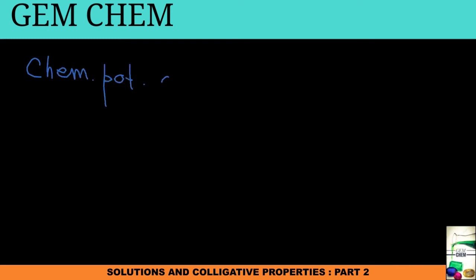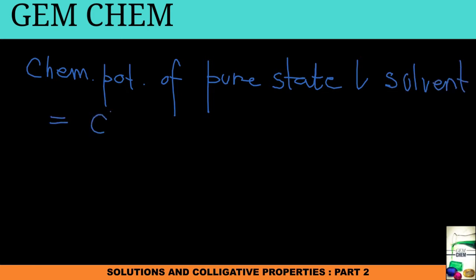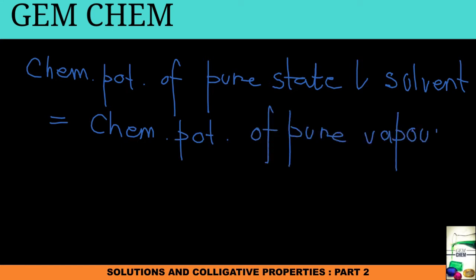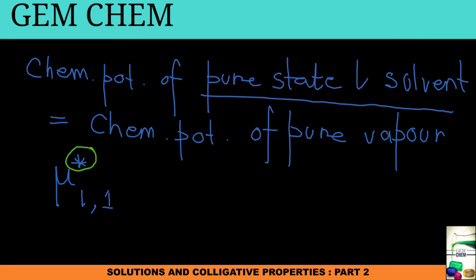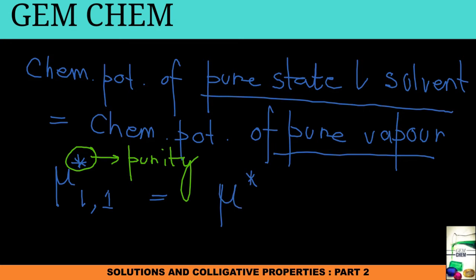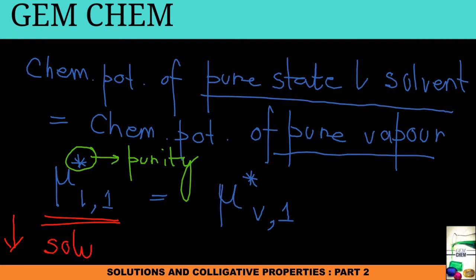An important thing to always remember is that the chemical potential of a pure state liquid solvent equals the chemical potential of the pure vapor — this must be understood for the solution chapter. If we denote the chemical potential of the pure liquid solvent as mu-star liquid 1, where the star always indicates purity, then the chemical potential of the pure vapor will be mu-star vapor 1.